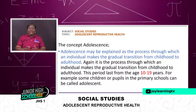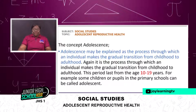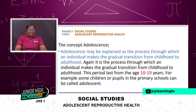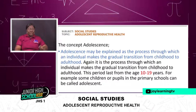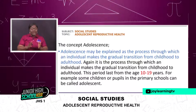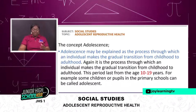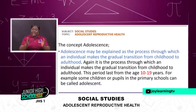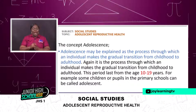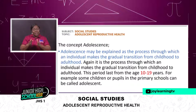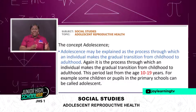Let's look at the concept of adolescence. Adolescence may be explained as a process through which an individual makes a gradual transition from childhood to adulthood. This period lasts from age 10 years to 19 years. For example, some children in primary school can be called adolescents. If you find yourself between the age of 10 and 19 years, then you are an adolescent.